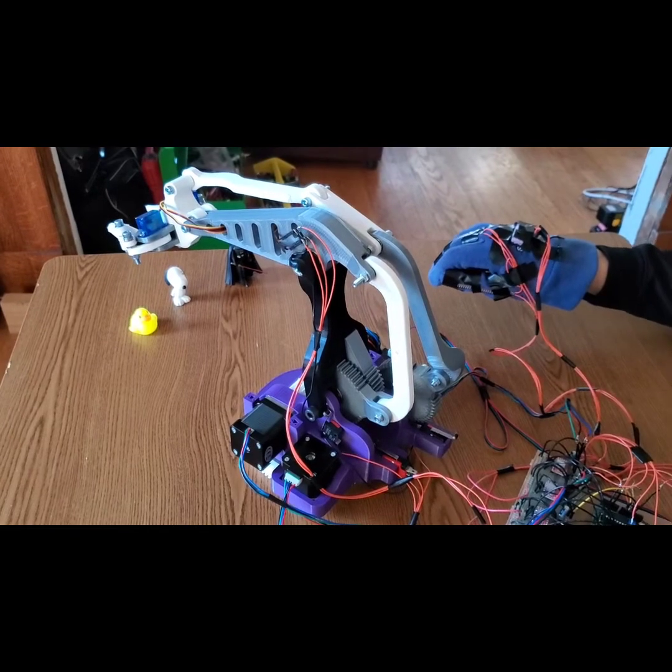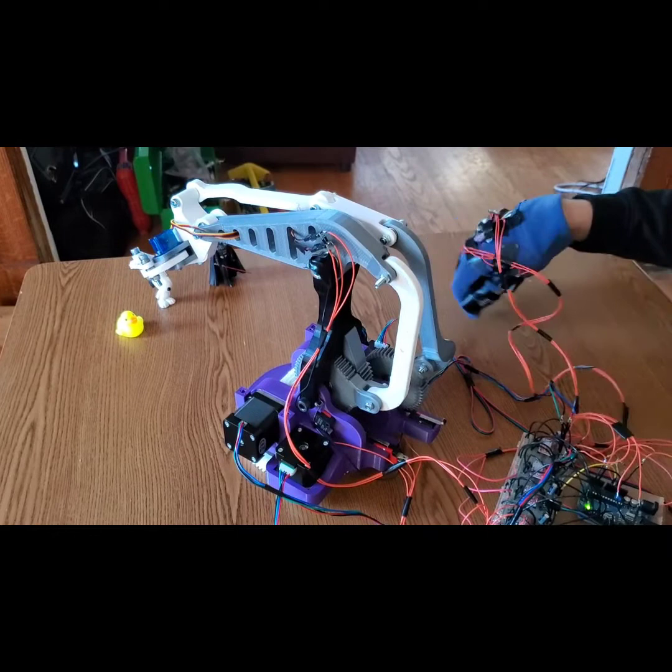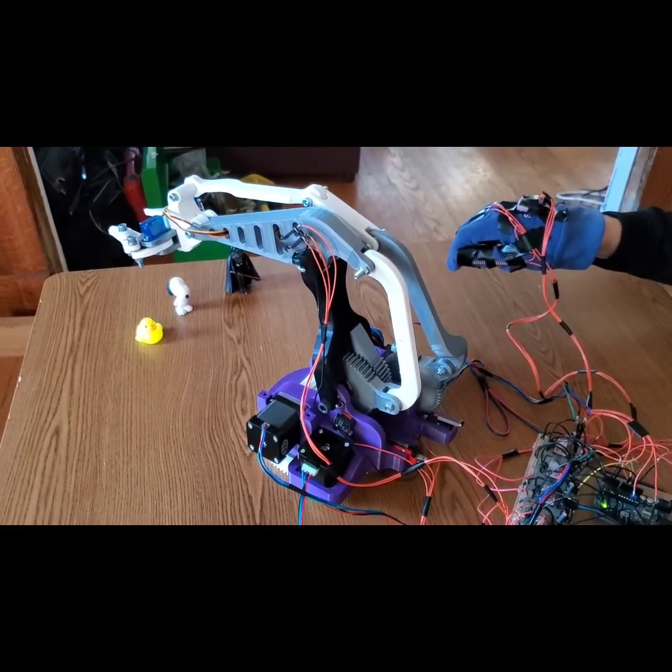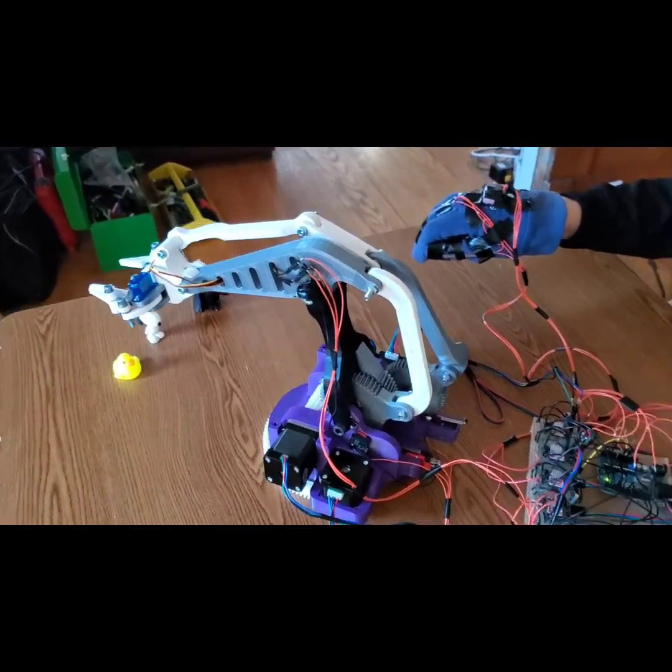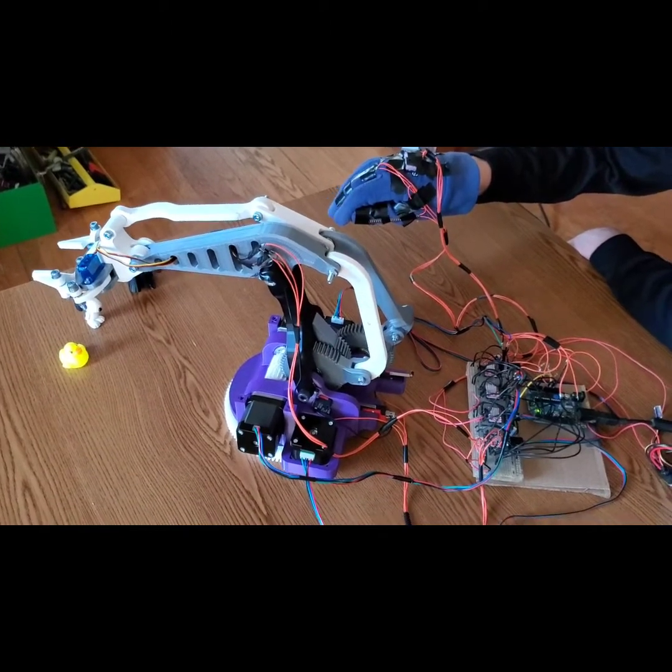So I'll start with my wrist. If I go like this, it goes backwards. If I go like this, this goes forwards. Now if I flex my middle finger downward a little bit, it goes down. If I go back to the middle, it stops. Same thing if I go up. It'll go up and then I stop.